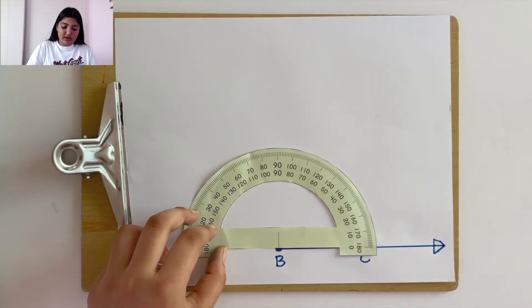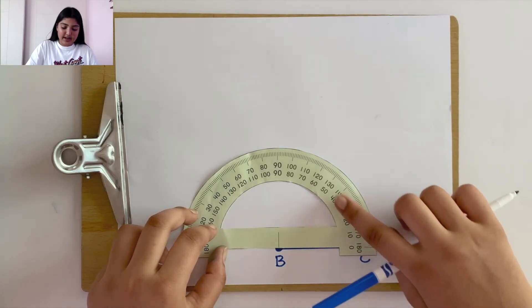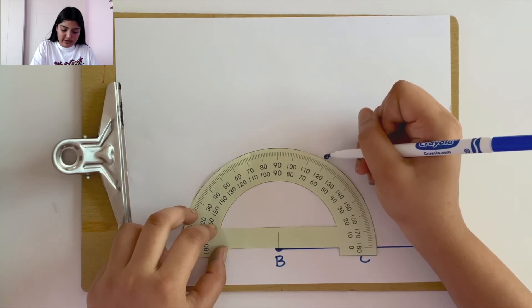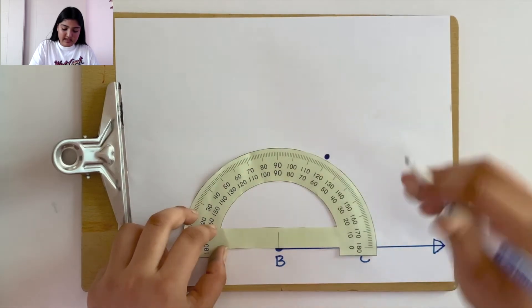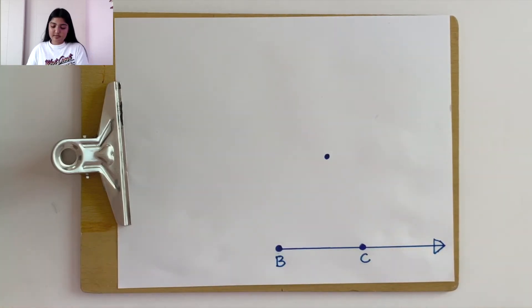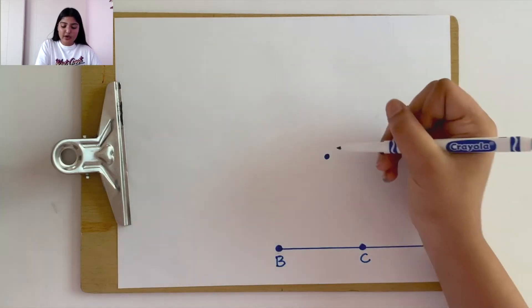We can align our protractor to point B. And since we want to make a 60 degree angle, make a mark, point A, or another point at 60 degrees.